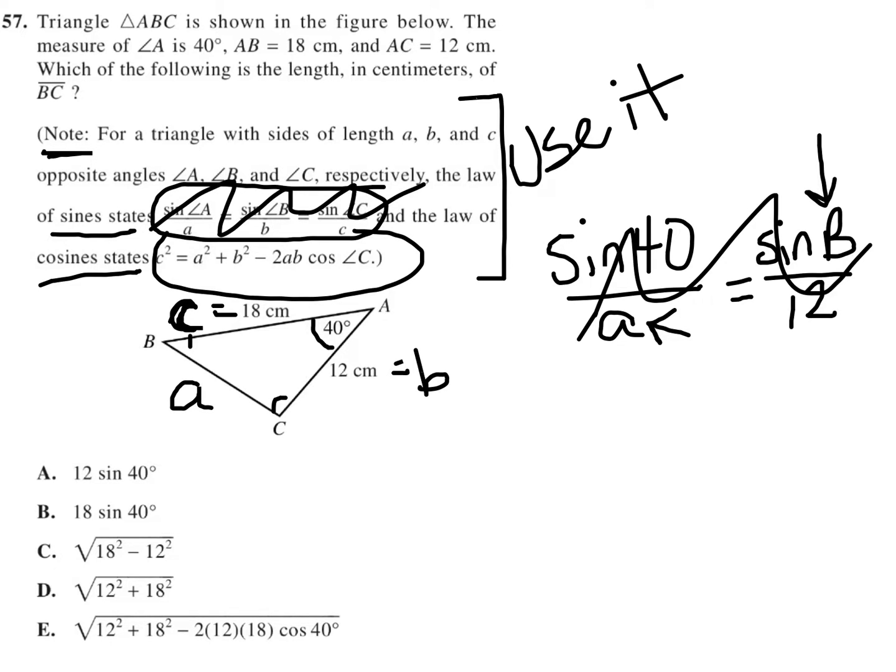Looking at the law of cosines, I have c², so in this case that would be 18² equals a² plus b², so that would be 12², plus 12² minus 2ab, so 2a times 12 times the cosine of angle C.